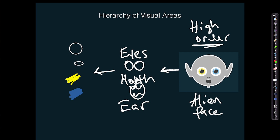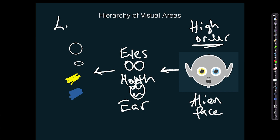There are cortical columns in the early parts of the visual hierarchy — V1 and V2 — that are specialised for recognising and representing lines in certain orientations. There are cortical columns specialised for recognising and representing colour information, which is why we're breaking it down this way. All of this is what we would call low order.